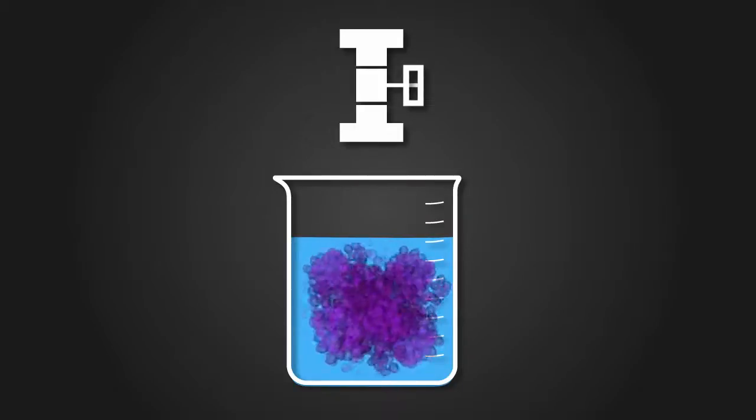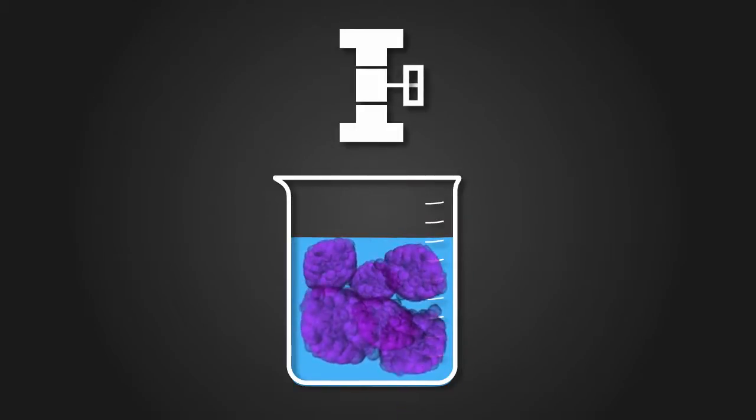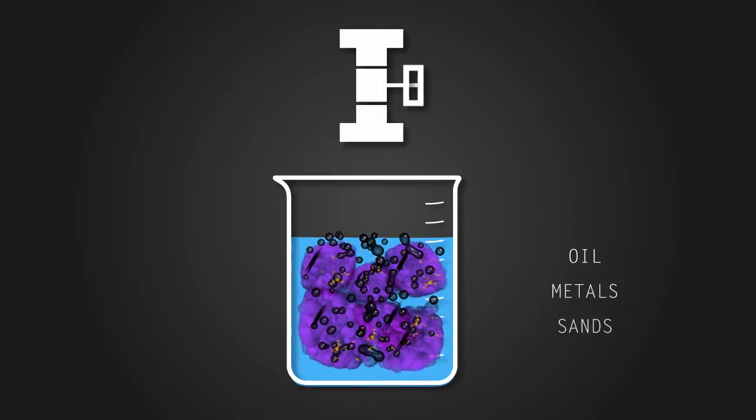Over time, reused production water becomes a thick emulsion that has collected used polymer which has traveled through the reservoir, as well as suspended oil, metals, sands, and bacteria.